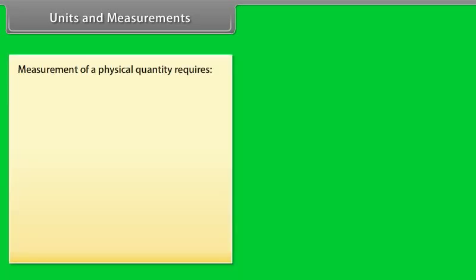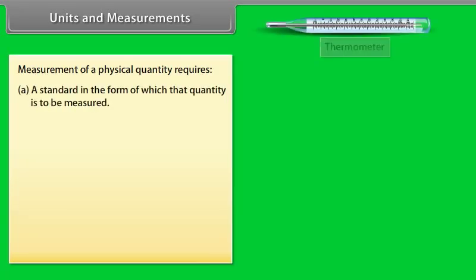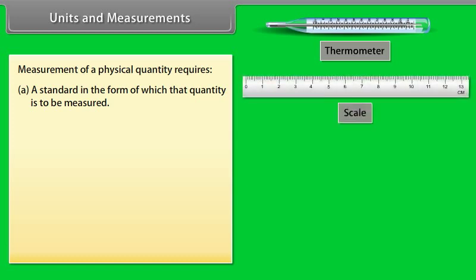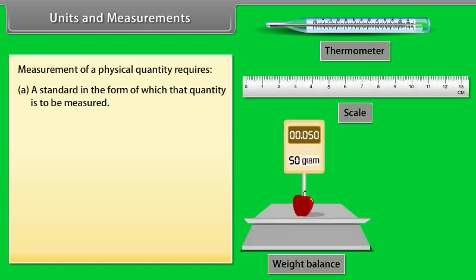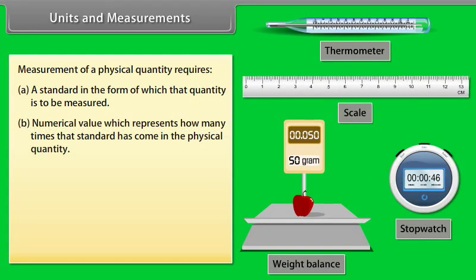Units and measurements: Measurement plays a very vital role in the study of physics. Measurement of a physical quantity requires a standard in the form of which the quantity is to be measured, and a numerical value which represents how many times that standard has come in the physical quantity. Units are classified in two categories: fundamental units and derived units.